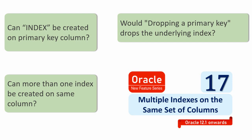So the answer to the first two questions is: you will be able to create an additional index, but only as an invisible index. At a time, two indexes should not both be visible for a particular column. Now the next question is: if we go and drop the primary key constraint, will the index get automatically dropped or not? Rather than answering directly, I want to show you three scenarios so that by the end of this video, you yourself will be able to answer whether dropping a constraint will drop the underlying index or not.